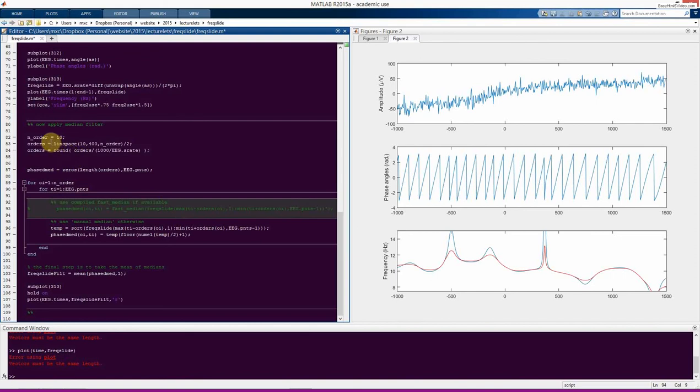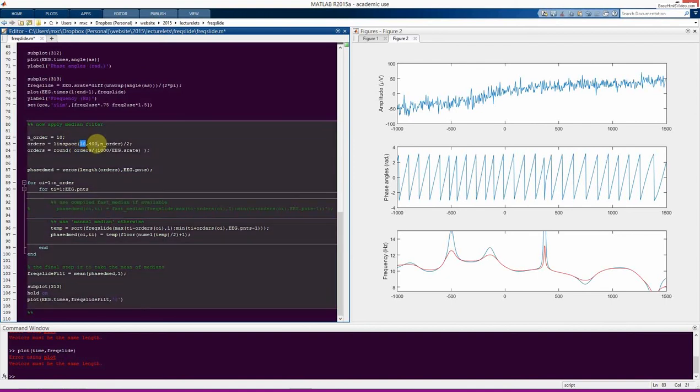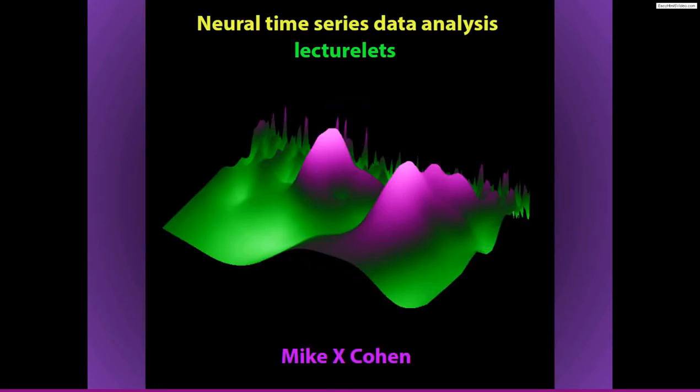The very last thing I'll point out is that we are doing this on multiple orders so we run through the data many times and compute the median over several different orders from 10 time points to 400 milliseconds actually and then it gets converted into time points. So this just provides some further smoothing to the function. Okay so I hope you found that interesting and useful. That's just a different way of thinking about brain oscillations, neural oscillations, that they change over time not only in their power structure and their phase dynamics but also in their frequency characteristics.